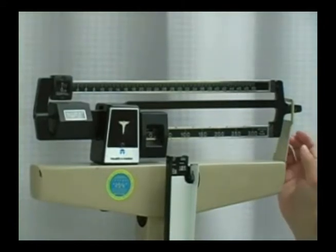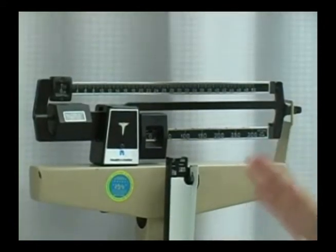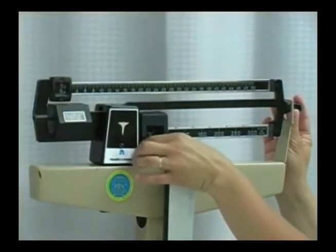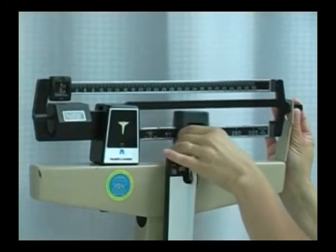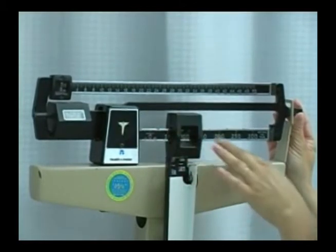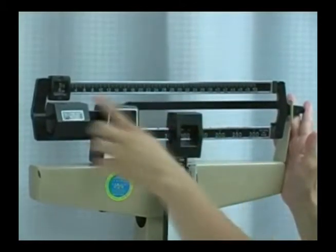After your patient has stepped on the scale, what you need to do is move this bottom weight over, and this is marked off in 50s. As you can see, it's 0, 50, 100, 150, and so you would have this go over to 100 here.